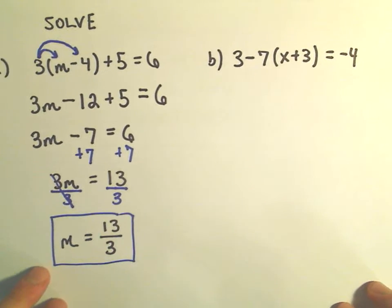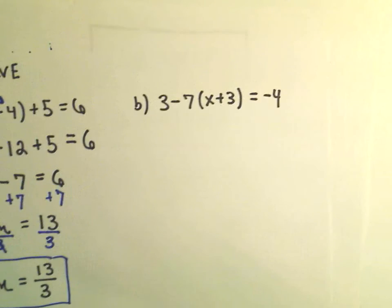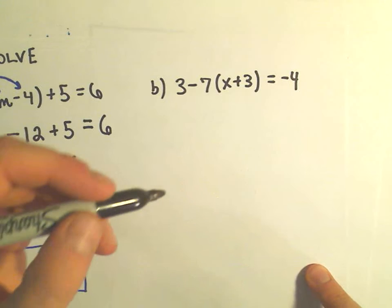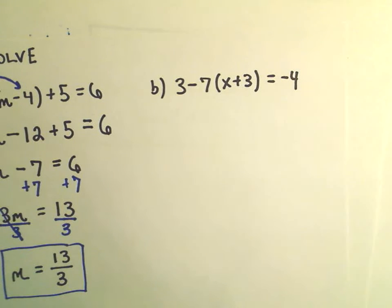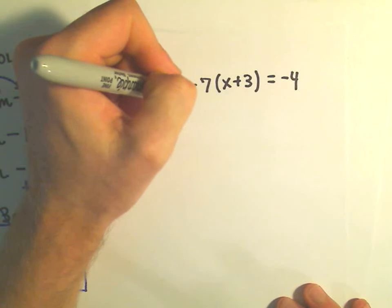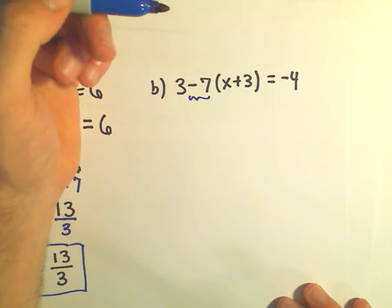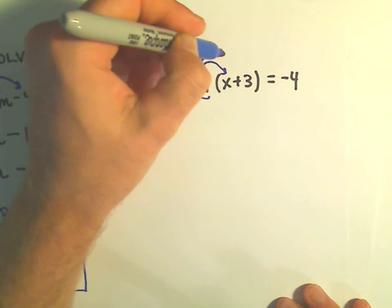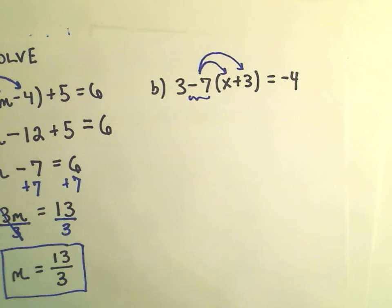All right, so part b here, we've got 3 minus 7 times the quantity x plus 3 equals negative 4. Now, the same thing we're going to have to distribute, but be a little careful here. To me, the thing in front of the parentheses is negative 7, so that's what I'm going to distribute to the x and to the positive 3 to get rid of the parentheses.